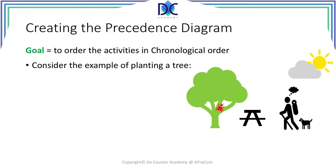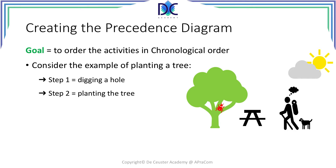Let's consider a simple example of planting a tree. The first step before we can plant a tree is digging a hole — we need the hole to put the new tree in. Step 2: we will plant the tree, so once the hole is finished we plant the tree. And the third step, we fill up the hole, which means that our little project is finished.